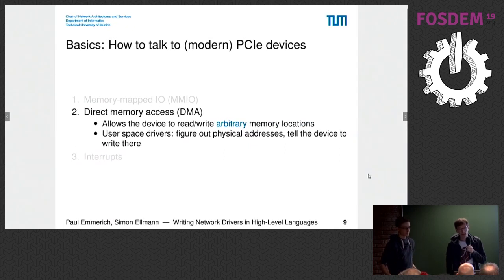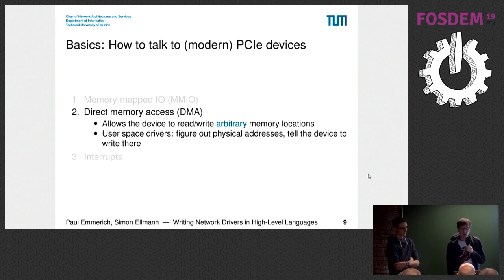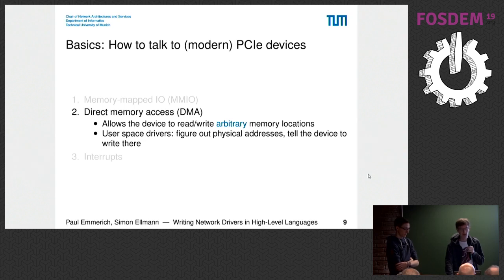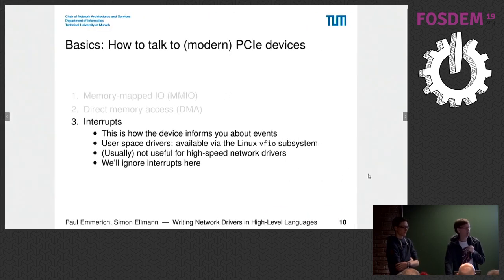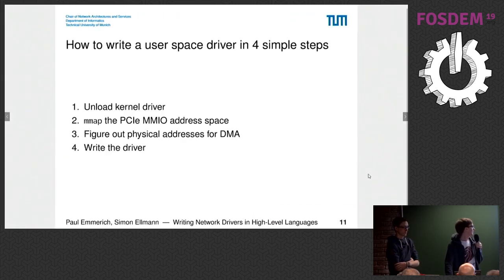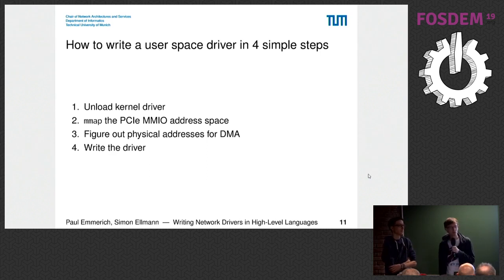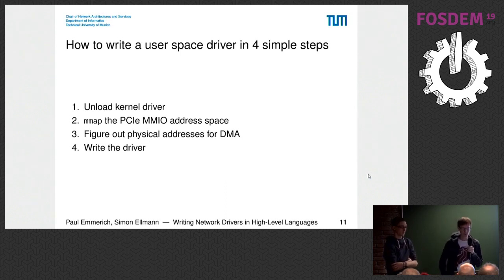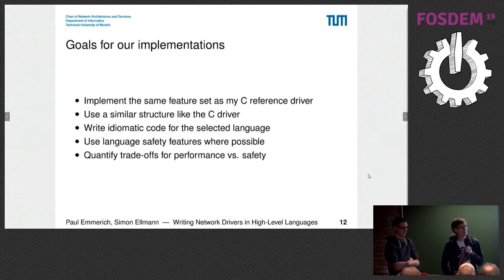Then you can do direct memory access — the device talks back by transferring memory. You just figure out where your data is located and the device can write into that memory, even if the language doesn't have pointers, as long as you know the memory address. Then there are interrupts, which we're not using here. Once you know that, there are four simple steps: remove the kernel driver, do the right mmap call, figure out the physical addresses which Linux tells you, and then just write the driver — which is simpler than you thought.